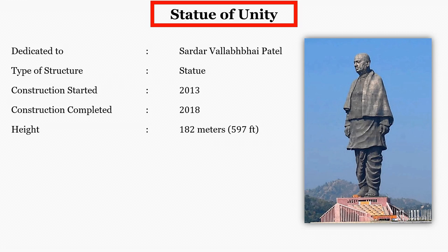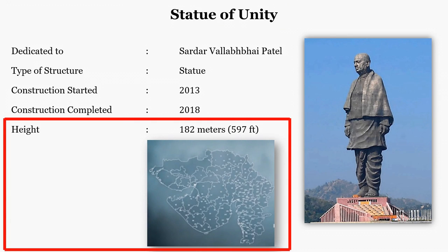Sardar Patel was born in Nadiad, which was a part of Bombay state at that time, and today it is a city in Gujarat. In Gujarat, there are a total of 182 democratic assembly constituencies, so the height of the statue was fixed at 182 meters.